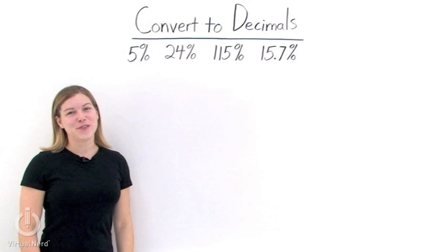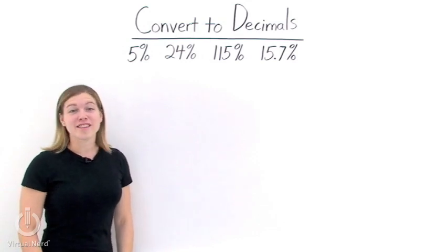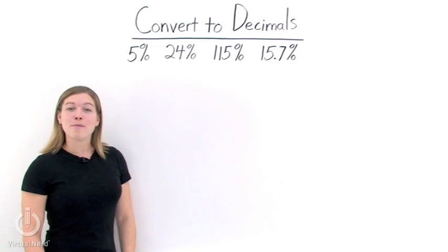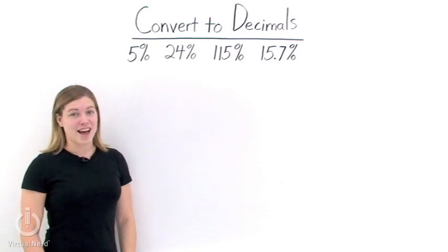Convert each one of these percents to a decimal. To convert a percent to a decimal, all we need to do is drop the percent sign and then move the decimal point two places to the left.